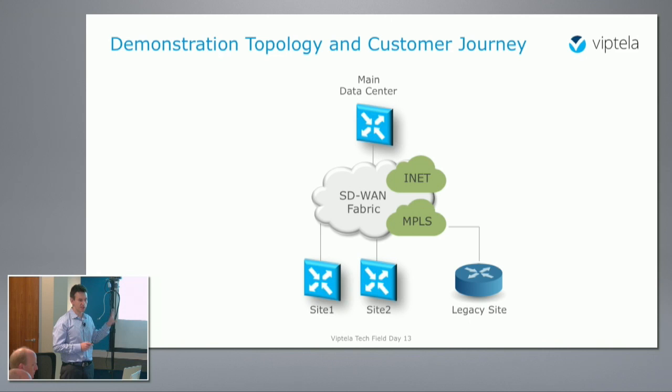It's all based on Viptela VEdge technology. There are no other devices or legacy routers that need to participate in a hybrid WAN setup. We're going to assume there is a traditional router — a Cisco CSR1000V — connected to one of my MPLS networks, and I want to be able to communicate from Site 1 to the legacy site straight through the MPLS network.